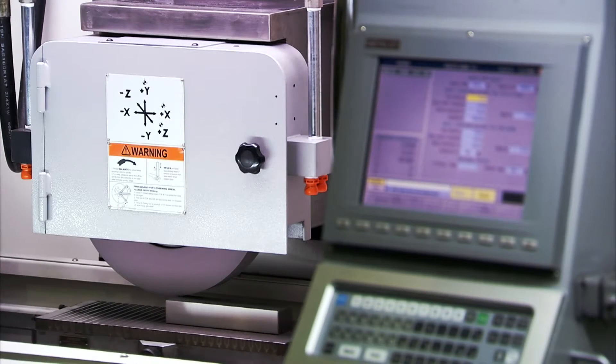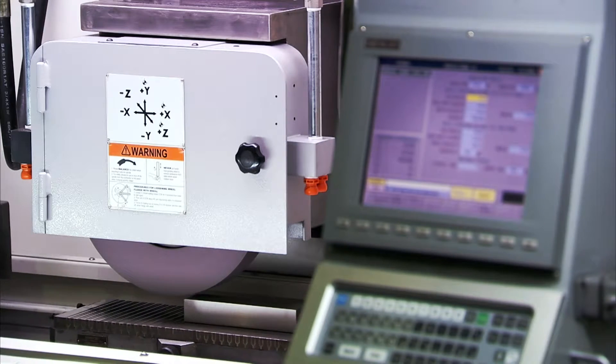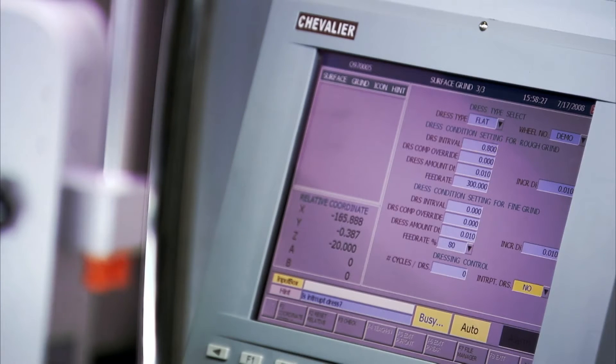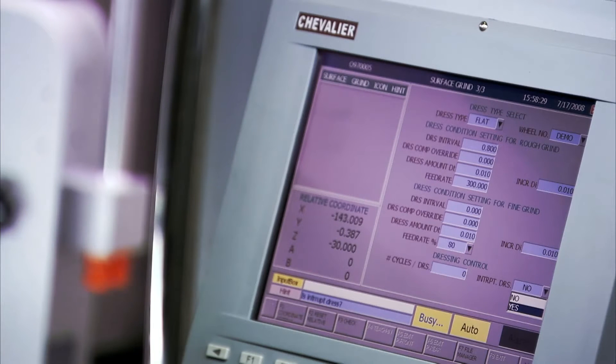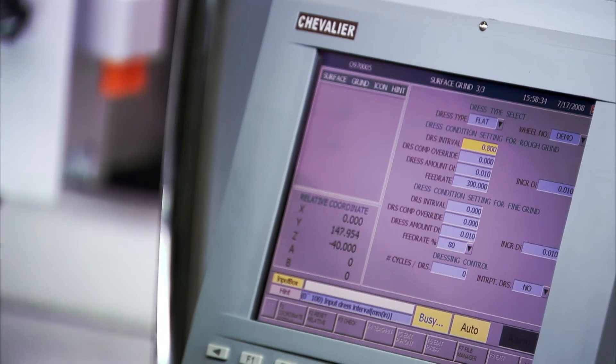One of the very special features of the Smart series is the dress interrupt function. Just press interrupt, enter yes, and the wheel is dressed with auto compensation then get straight back to work without the need to restart work from the beginning each time.